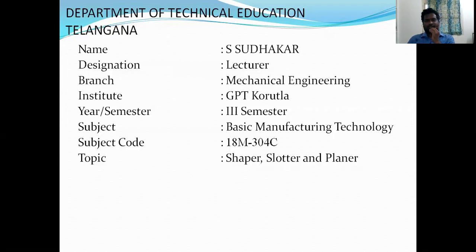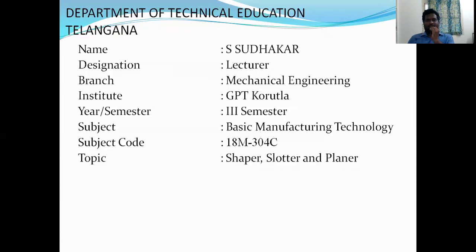The constructional details — base, tool head, cross slide, ram slide, ram, and tool post — are parts of the shaping machine discussed in the previous session. The types of shaping machine were also covered: horizontal shaping machine, vertical shaping machine, and universal shaping machine. These are the generally used shapers available while performing shaping operations.